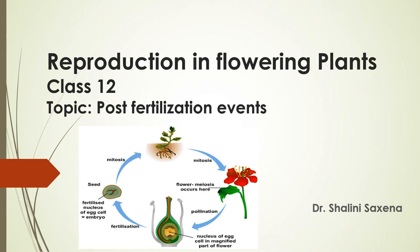Now we are on the last topic of this chapter, that is post-fertilization events. As you can see in this life cycle diagram, after fertilization there is a major event that takes place in post-fertilization events — the development of endosperm and embryo. From fertilization or syngamy, there is a formation of the primary endosperm nucleus and the zygote. That primary endosperm nucleus will develop into the endosperm, and the zygote will change into the embryo, which is inside the ovule. Finally, the ovule will change into the seed — a future plant.